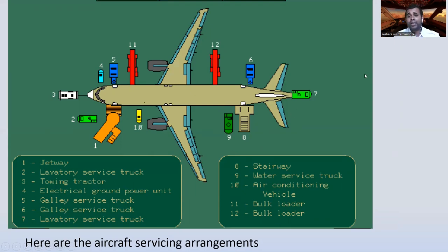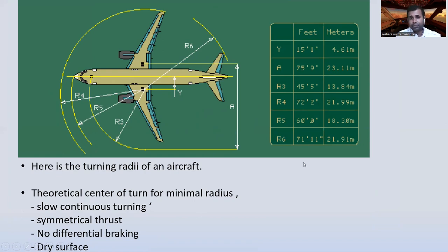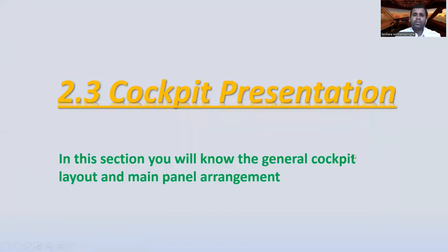Here is the turning radius of the aircraft. You can see feet, meters, Y, and values R3, R4, R5, R6. The Y distance is 15 feet 1 inch. This is the turning radius of the aircraft — theoretically the center of turn for minimum radius, slow continuous turning, symmetrical thrust, no differential braking, on a dry surface.